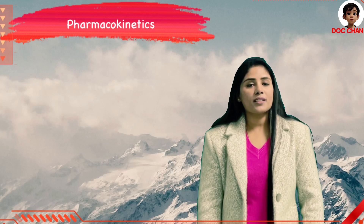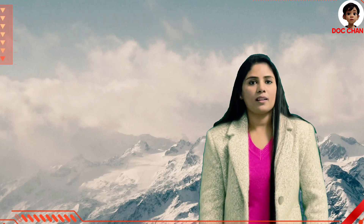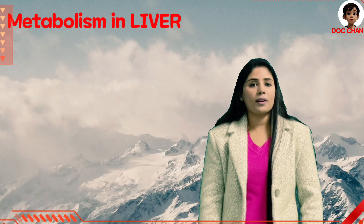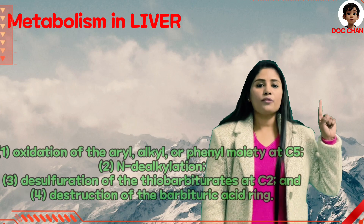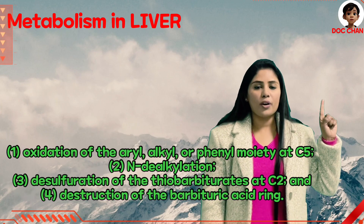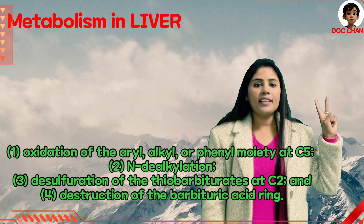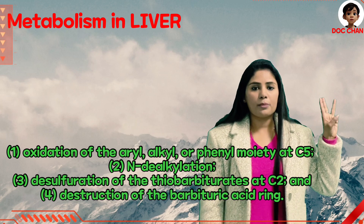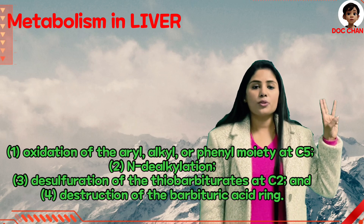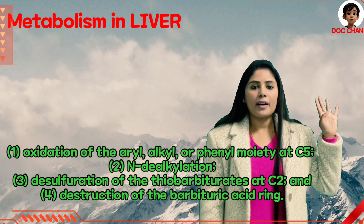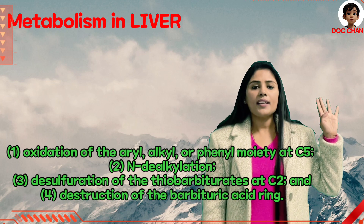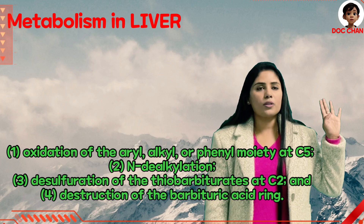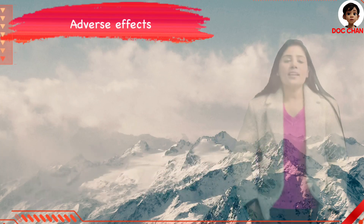Discussing the pharmacokinetics of thiopental, it is largely metabolized in the liver by four ways: oxidation of aryl, alkyl, and phenyl moiety at C5; dealkylation; desulfuration of the thiobarbiturate at C2 level; and fourthly, by the destruction of the barbituric acid ring. The inactive metabolites, being water-soluble, are excreted in urine.